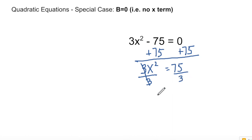And divide by 3, that cancels. Divide this by 3. Now we're going to get x squared equals, let's see, 75 divided by 3 is 25. So x squared equals 25. And then when we take the square root of both sides, again, we have a positive and a negative case.